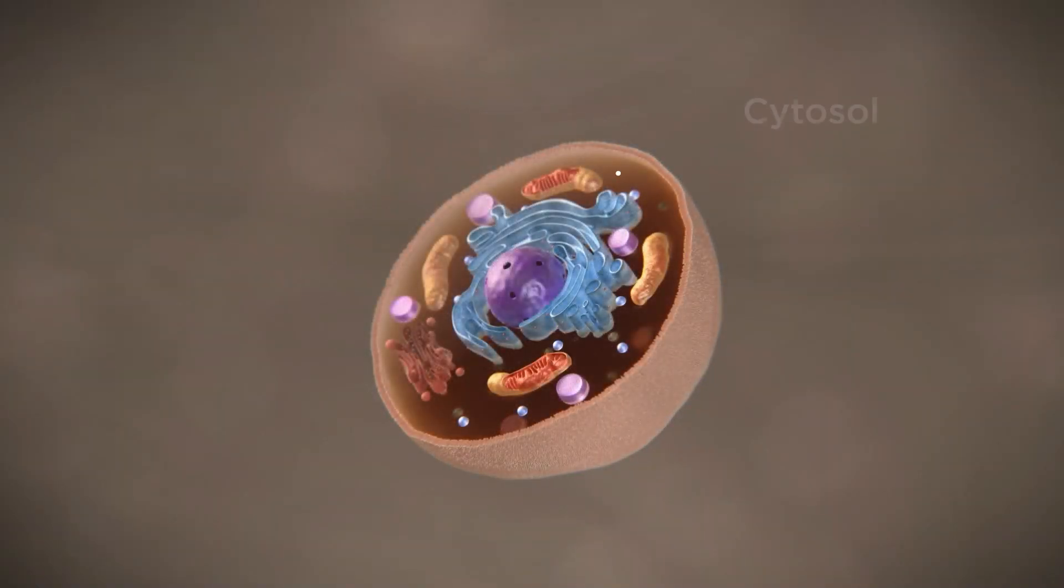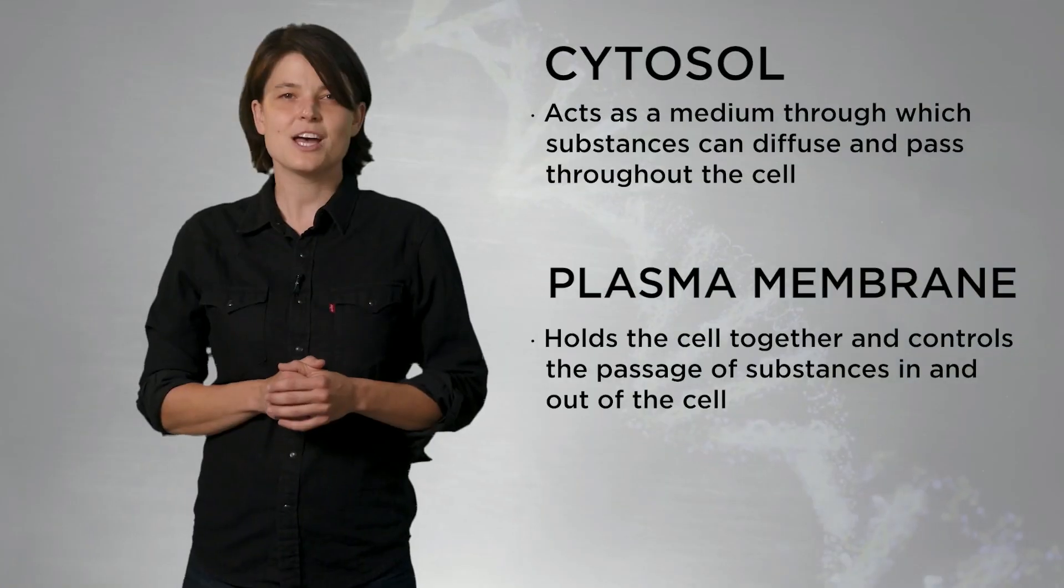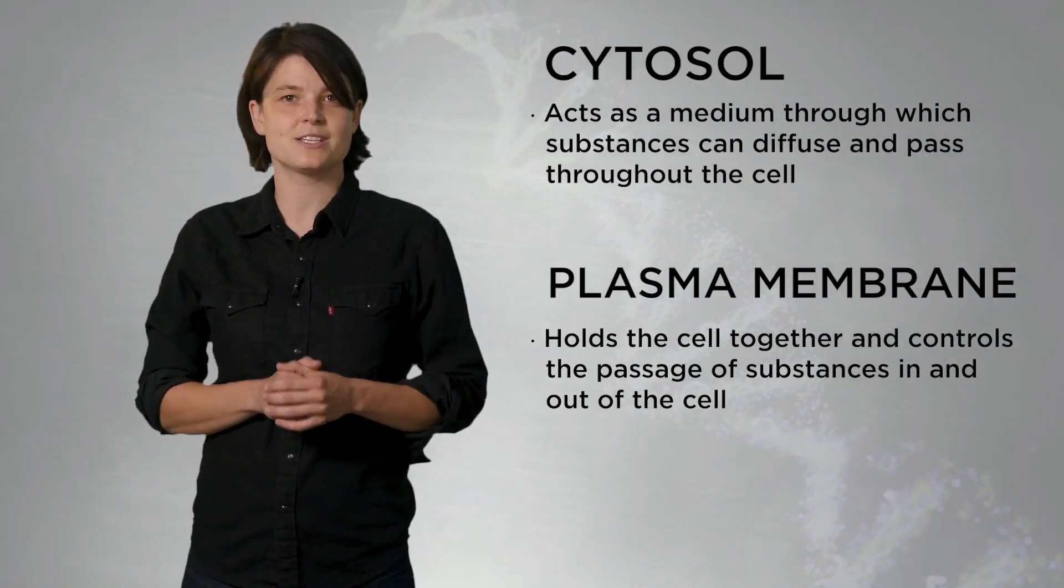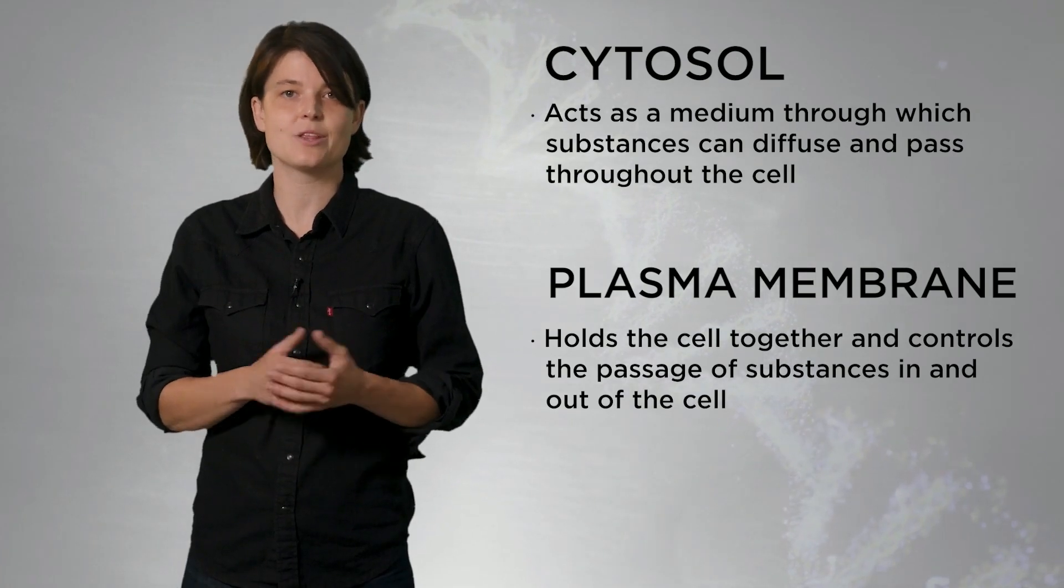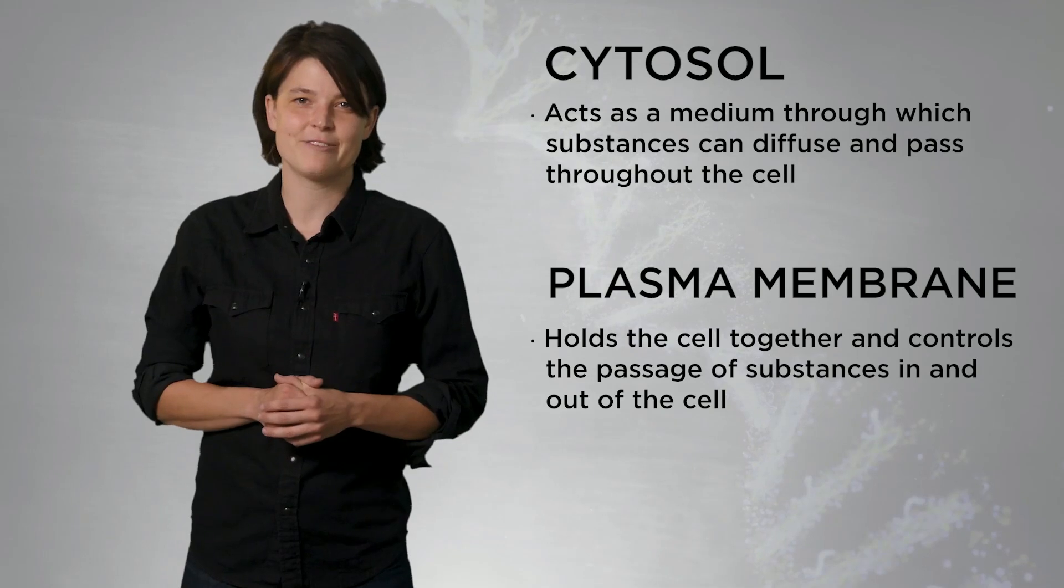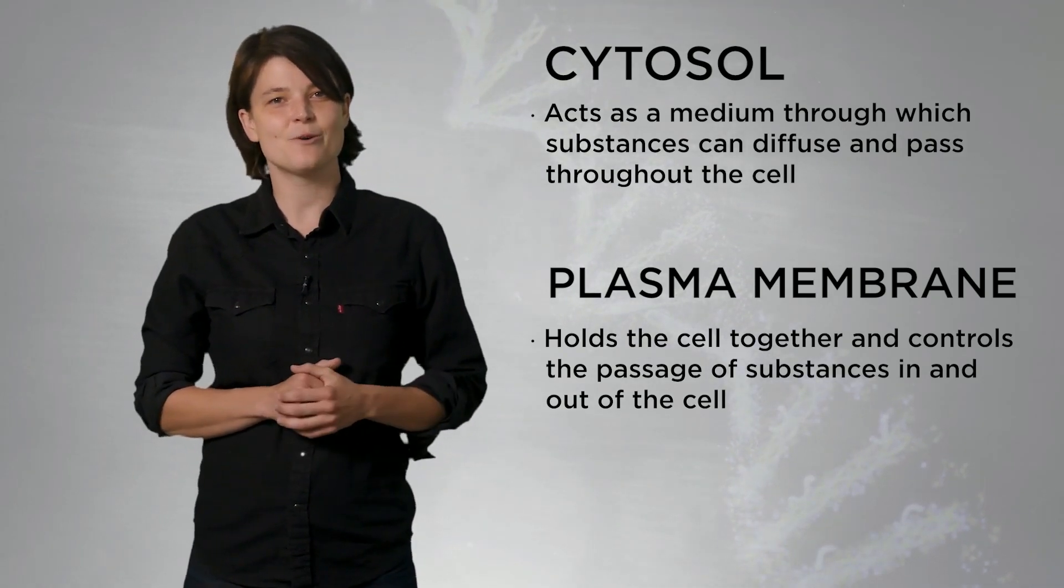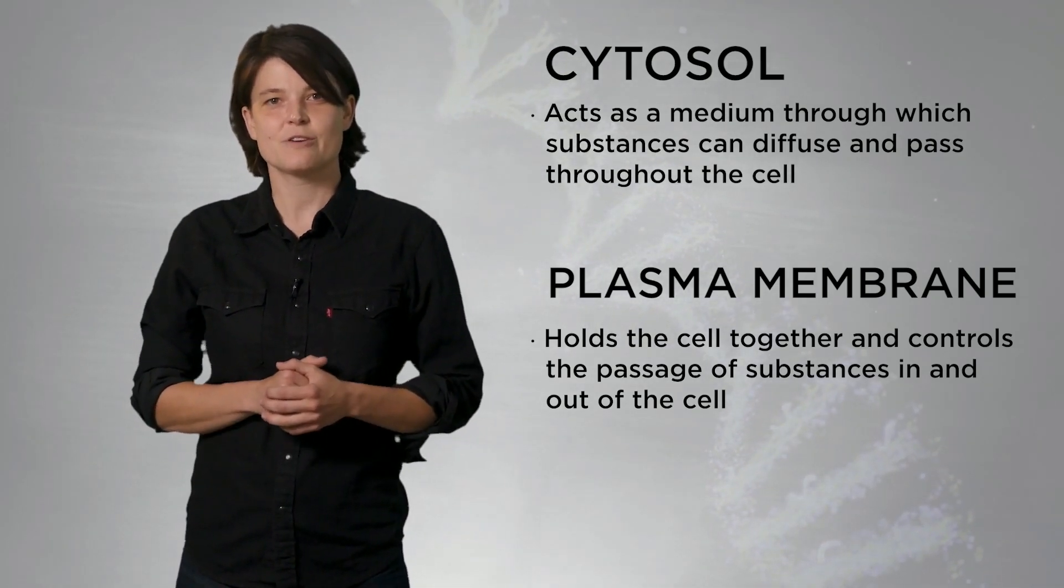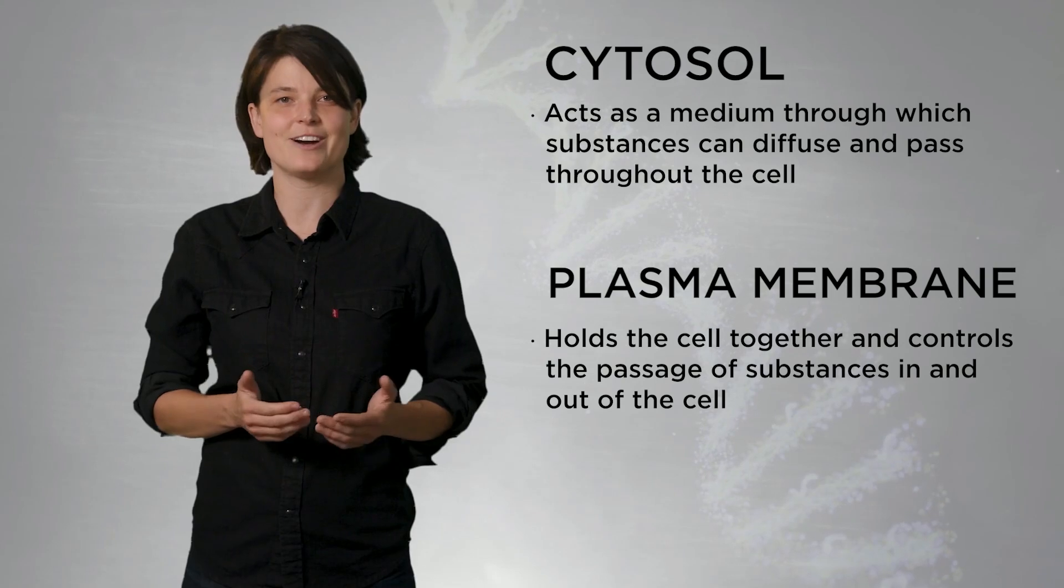Inside the membrane is a substance called cytosol, in which all the other structures are held, and which acts as a media through which substances can diffuse and pass throughout the cell. We'll discuss the plasma membrane in much more detail in another video. In this video, we're going to focus on organelles, which are functional structures within eukaryotic cells.